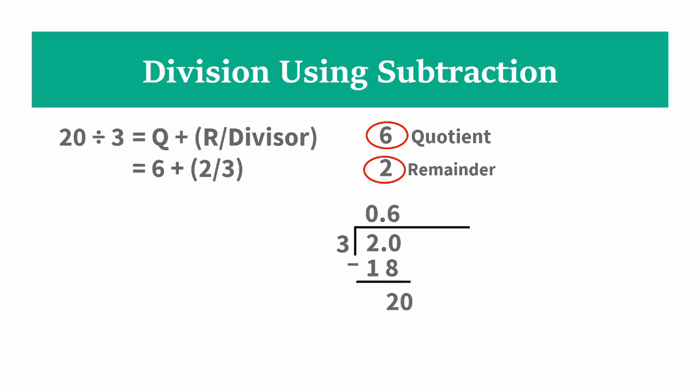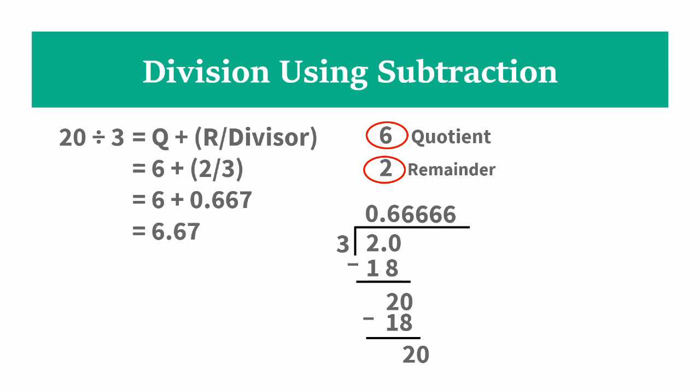We bring down another 0, so we repeat: 20 divided by 3 is again 6, 6 times 3 is 18, subtract to get 2, and bring down another 0. If we observe, it is repeating — the result is always 20 and 6 is always the quotient, so it will be a never-ending repetition of 6. Therefore we stop and round off to 3 decimal places, giving 2 divided by 3 equal to 0.667.